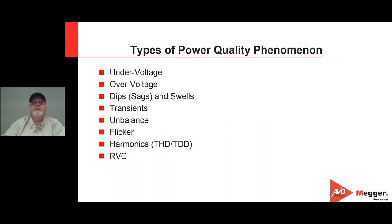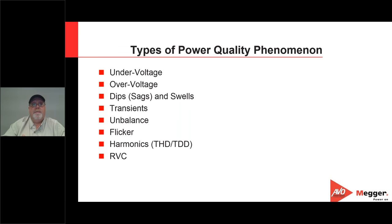In this presentation we're going to cover, at a pretty high level, some of the most typical power quality phenomena we encounter today. These will include under voltages, over voltages, dips or sags and swells, as well as transients, unbalance, flicker, harmonics, THD or total harmonic distortion, total demand distortion, and RVC, also known as rapid voltage change. We're going to discuss what these are, what they cause, and what problems they create.